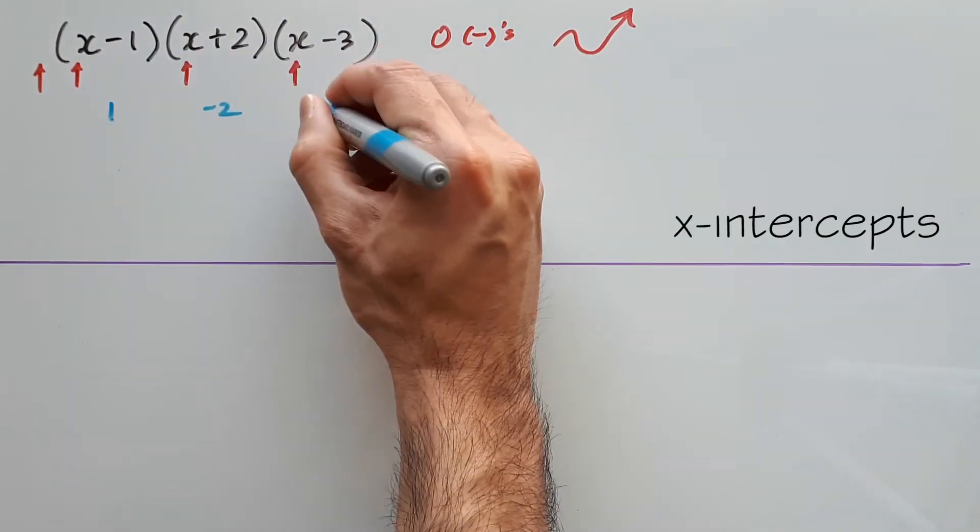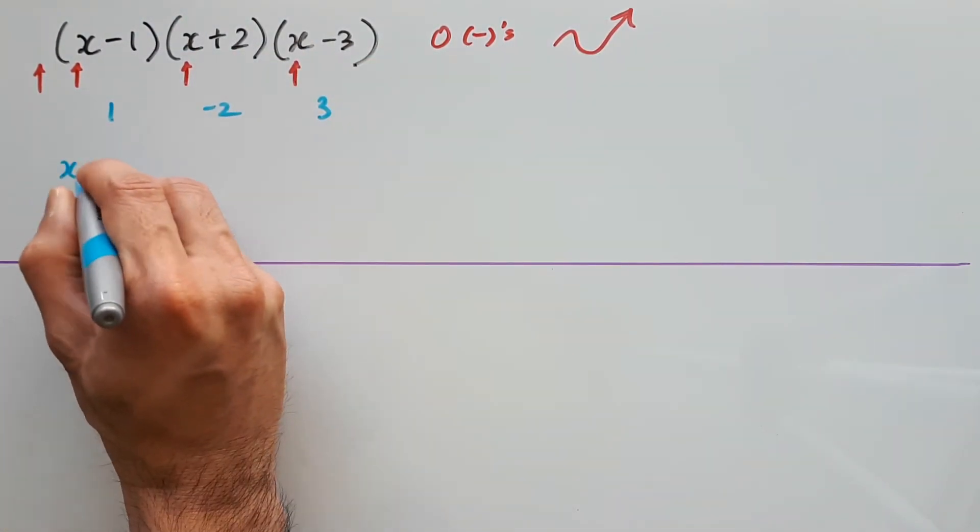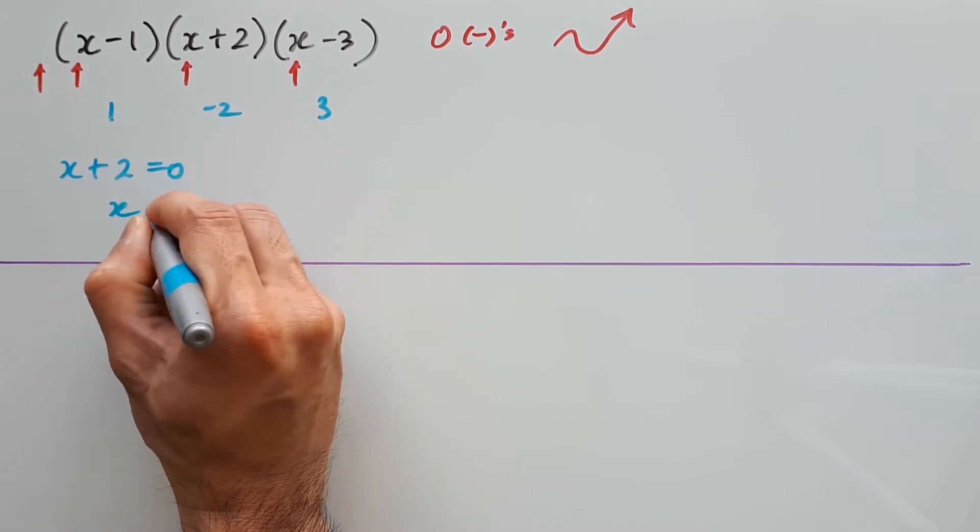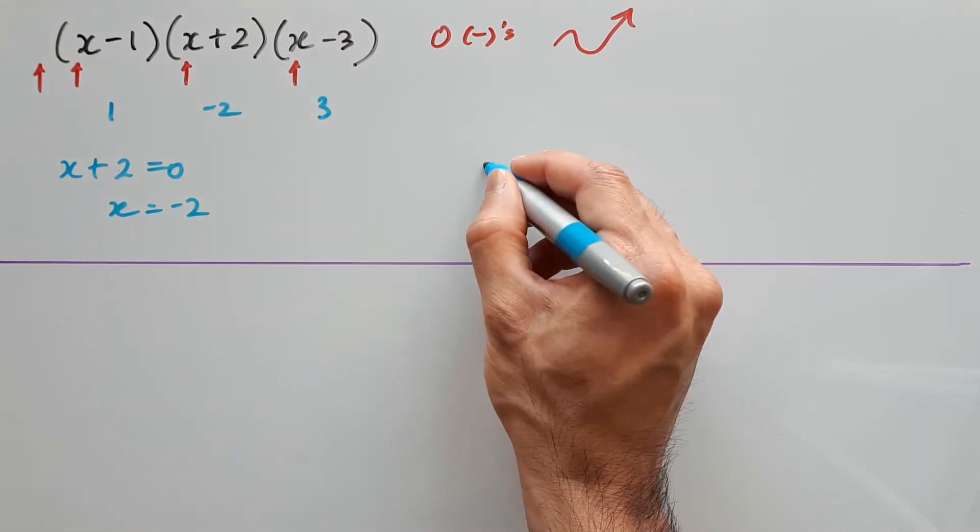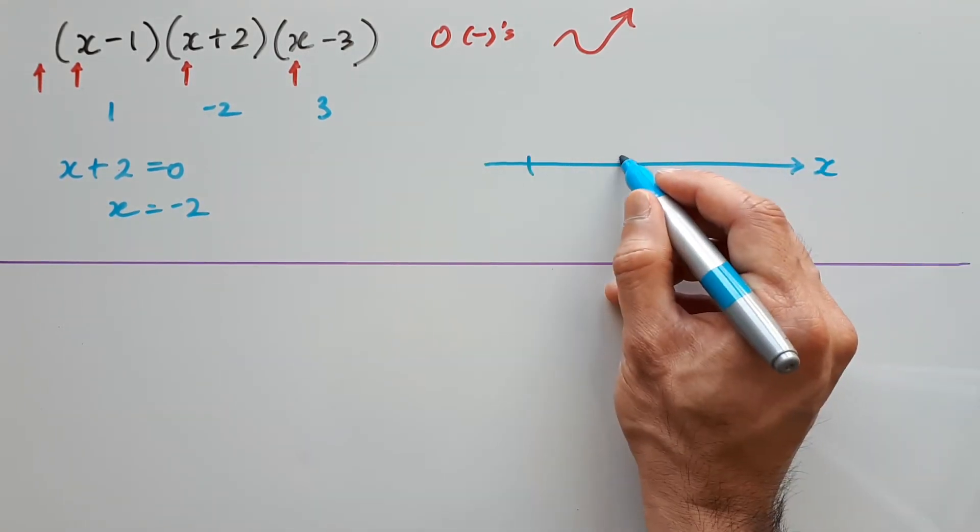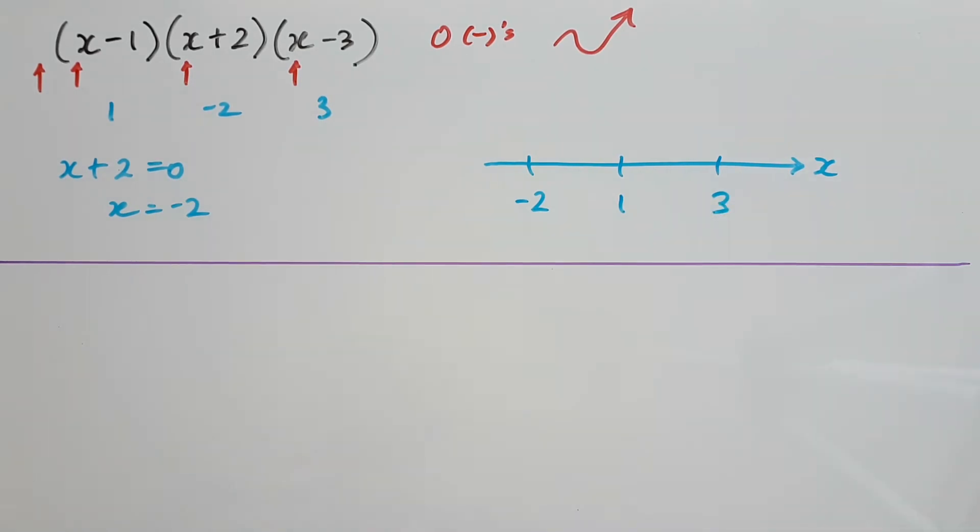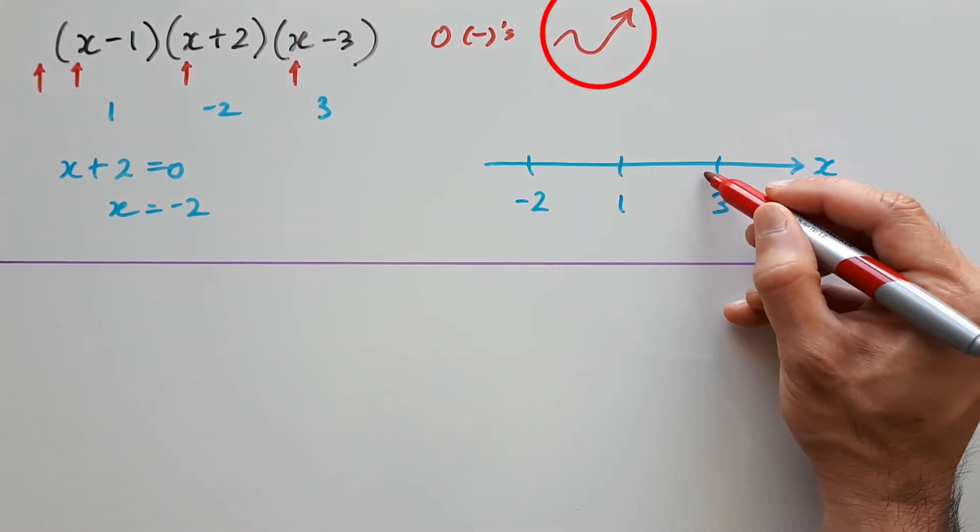Now get your x-intercepts. It is just a matter of using the null factor law and solving for each factor equal to 0. So we have 1, negative 2, and positive 3. Set this up on the x-axis, making sure to keep the intercepts in ascending order. Notice how 3 is the rightmost intercept. This means the curve is going to finish upward through this intercept.